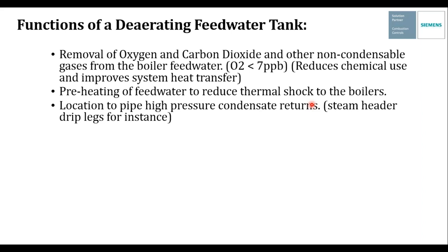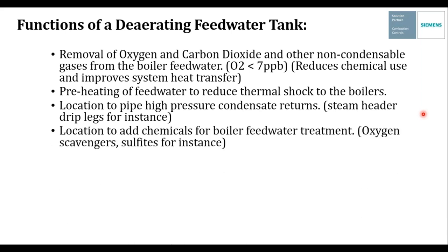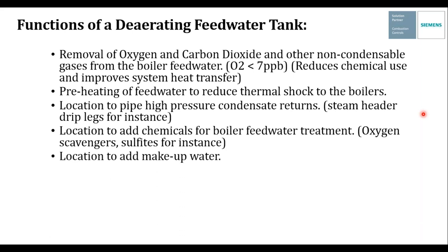In removing those oxygen, carbon dioxide, and air molecules, we use steam — and as a result we end up preheating the feed water, which helps reduce thermal shock to boilers. We also have a location at the deaerator for high-pipe condensate returns and steam header drip legs. In a saturated system, water going from higher pressure to lower pressure will flash off steam to reach saturation temperature at the lower pressure; putting that flash steam into the deaerator is a great way to eliminate flash steam loss and recover associated water.